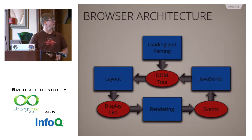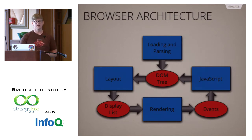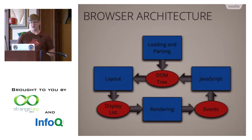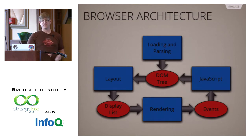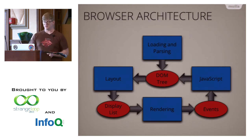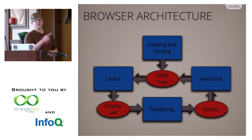The user does something like clicking a link or moving the mouse, which creates JavaScript events. The script executes, does all kinds of things — one of which is modifying the DOM tree. Once you've modified the DOM tree, you go all the way back around the loop. Now you want this to be really, really fast. One way is to not go all the way around the loop — you can skip parts.